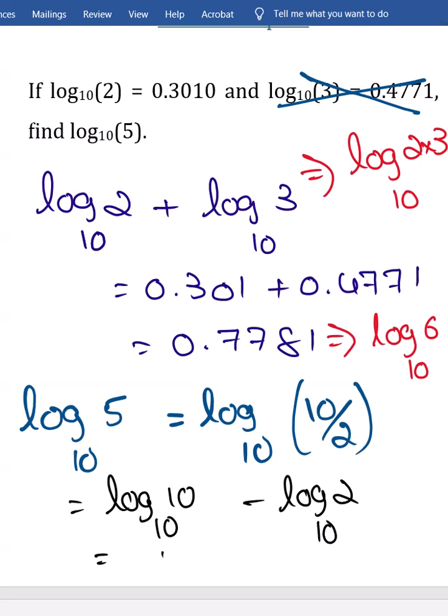Log 10 base 10 is 1. Log 2 base 10, they are given already in the question 0.301. The result is 0.699. 0.699 not 0.7781.